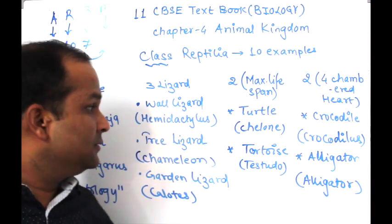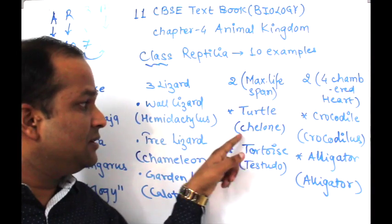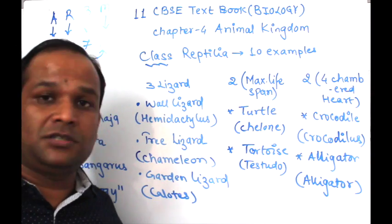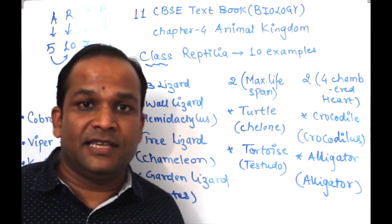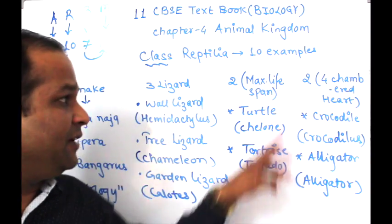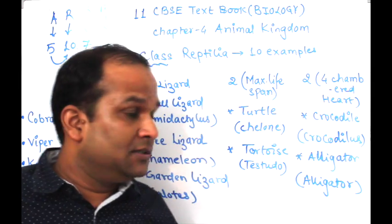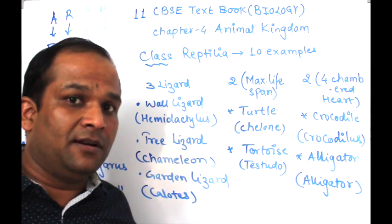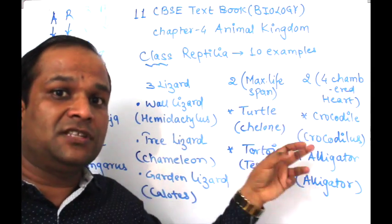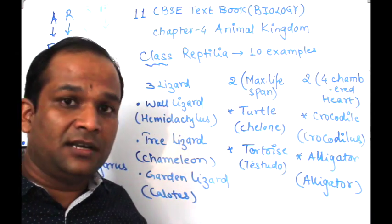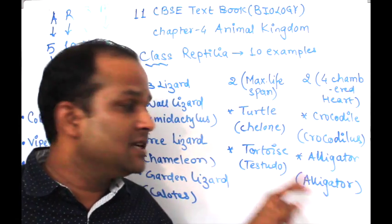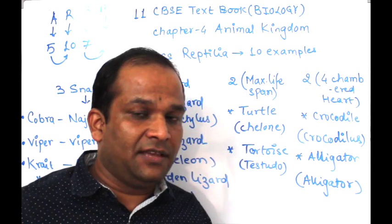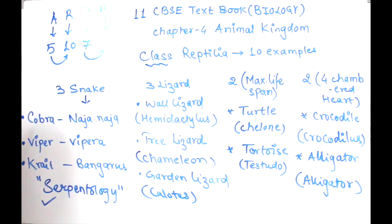2 examples are those organisms which have the maximum life span — Turtle (Chelone) and Tortoise (Testudo). Then 2 examples having a completely 4-chambered heart, which is not normally found in Reptilia: Crocodile (Crocodilus) and Alligator (Alligator). So total 10 examples are given.